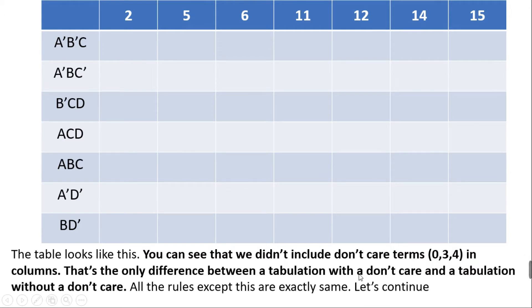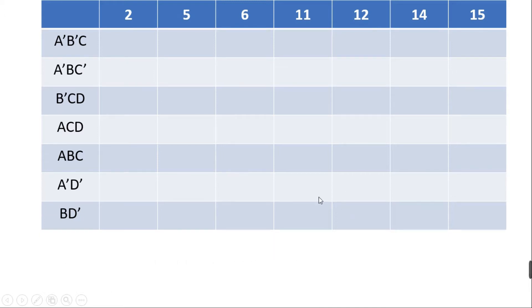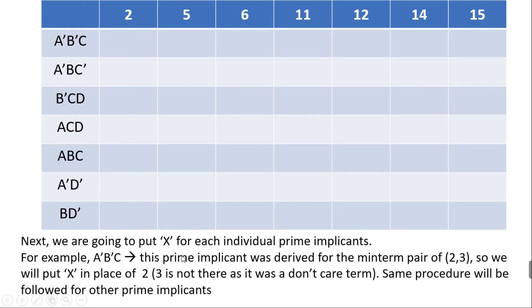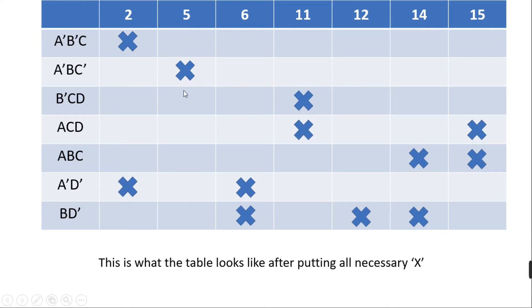That is the only difference between a tabulation problem with don't cares and one without. All other rules are exactly the same. Now we place a symbol X for each prime implicant. For example, the prime implicant A'B'C was derived for the minterm pair 2, 3, so we put X at position 2 only — there is no column for 3 since 3 was a don't care term.